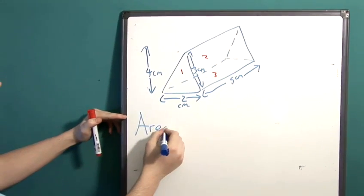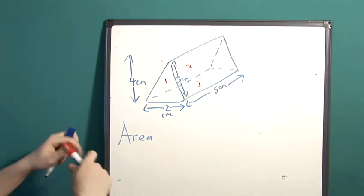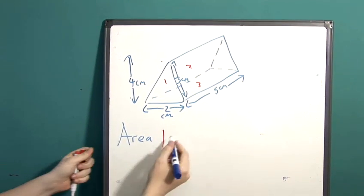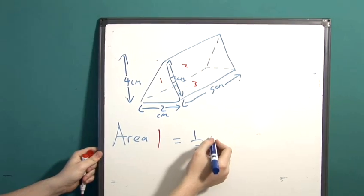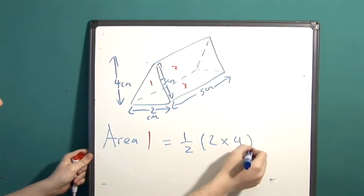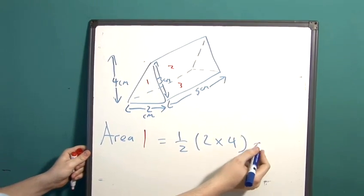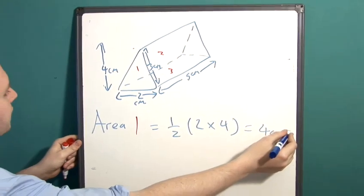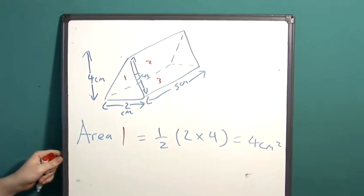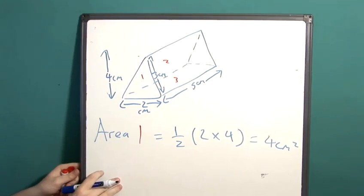The area of one is one-half multiplied by two times four. Eight multiplied by a half is four centimetres squared. That's because the area of a triangle is one-half times base times height.